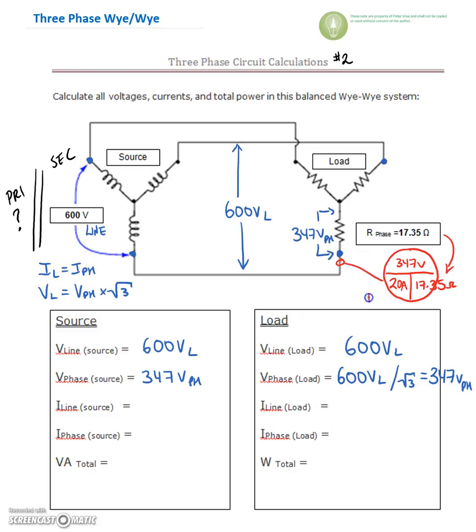Beautiful. That's the current that's flowing right there. So that's our phase current. We found that again by taking our 347 volts, dividing it by 17.35 ohms, and that gave us a phase current of 20 amps.